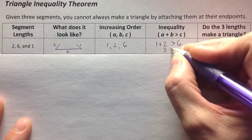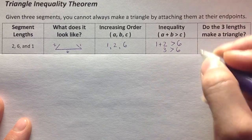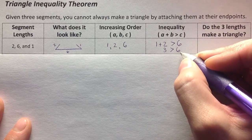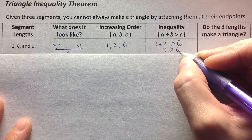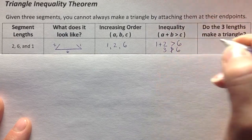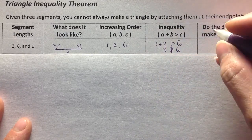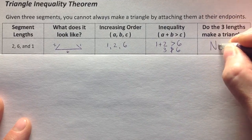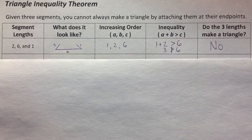And as we just saw, if I add 1 and 2, they're not going to reach across if they're 6 inches away from each other. They're too short. So their sum was not greater than 6. So did it make a triangle? No, it did not. All right, let's look at the next example.